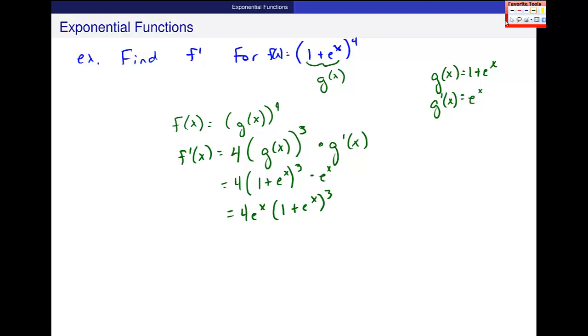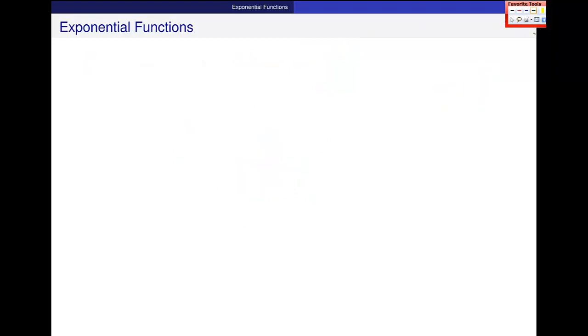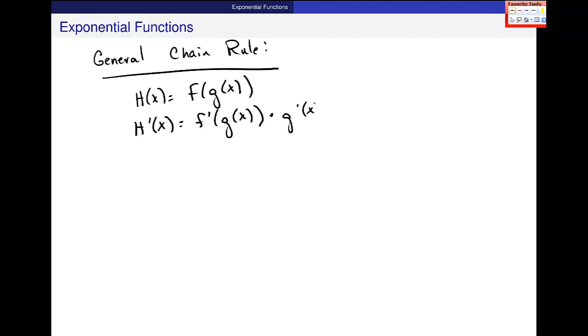Now, these sometimes do get more complicated, especially when I have more than just x in the exponent. And I'll remind you of the general chain rule, because that's what we'll use here to differentiate these. So if h of x is f of g of x, we said that the derivative of that was f prime of the inside times g prime of x. And this led to the general power rule.